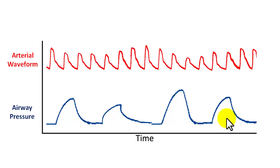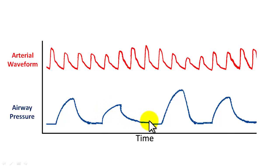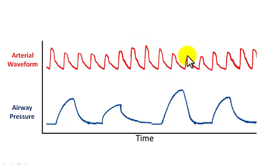Alternately, if the patient is not receiving regular tidal volume ventilation and has small breaths and large breaths, the large breaths can make bigger changes in the systolic pressure and increase the stroke volume variability beyond the patient's true physiologic state.